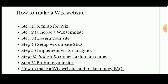Step 6: publish your content and set your domain name. Choose your domain name carefully. Step 7: promote your site. Promoting your site is essential — find a good niche. These are the seven parts of how to make a Wix website and make money.